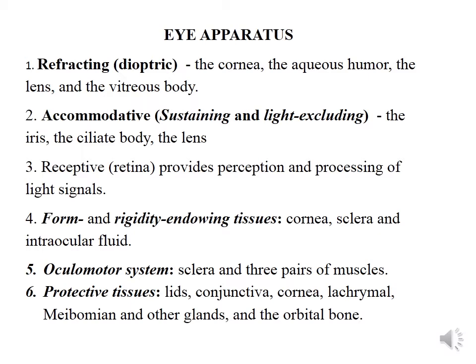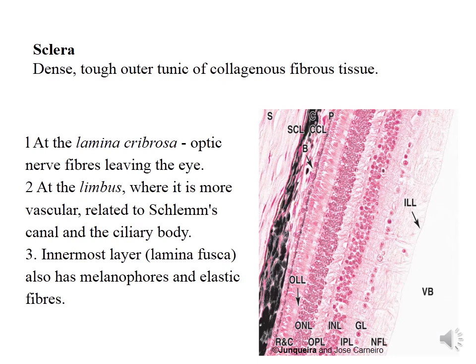The oculomotor system includes the sclera and three pairs of muscles. Protective tissues include lids, conjunctiva, cornea, lacrimal gland, meibomian glands, and others. The sclera is opaque and provides insertion for the extraocular muscles. It consists of dense connective tissue made up of collagen bundles, a moderate amount of ground substance, and few fibroblasts. Distinguishable structures include the lamina cribrosa, limbus, and lamina fusca.